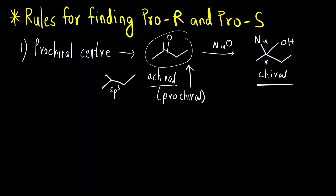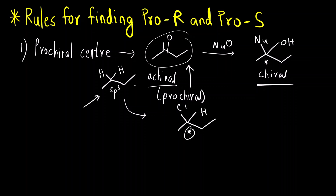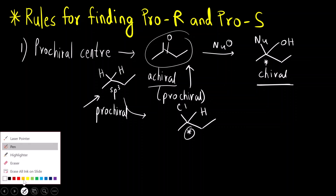Another example is an sp3 hybridized carbon with two hydrogens. If you replace one of the hydrogens with some other group, say chlorine, it becomes chiral. So this sp3 hybridized carbon, which was achiral before replacement, is called a pro-chiral center — after replacing one of the groups it becomes chiral.